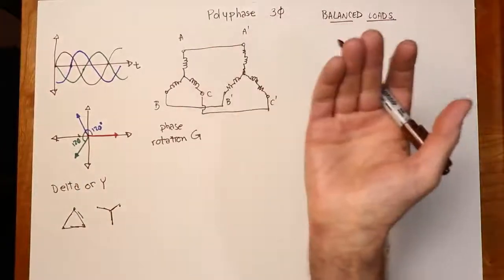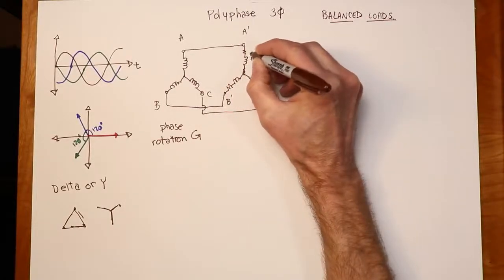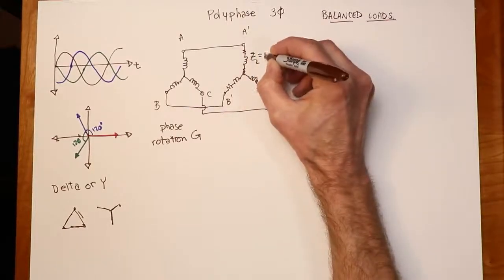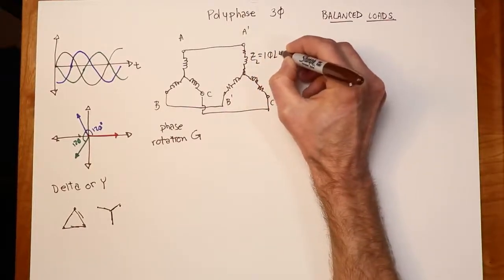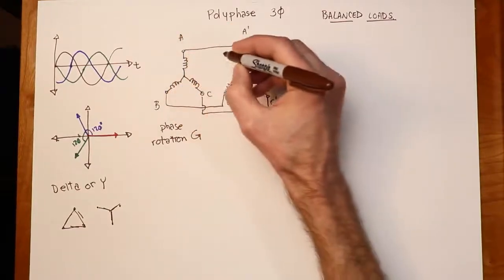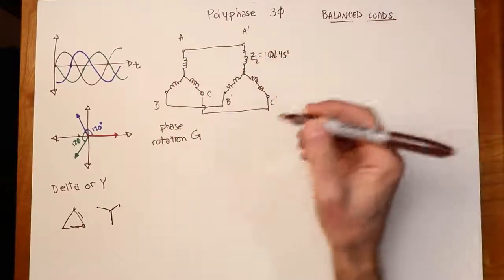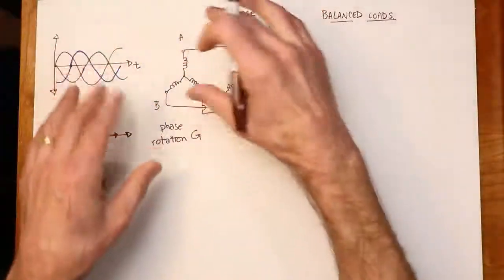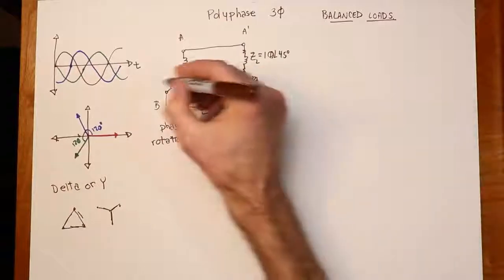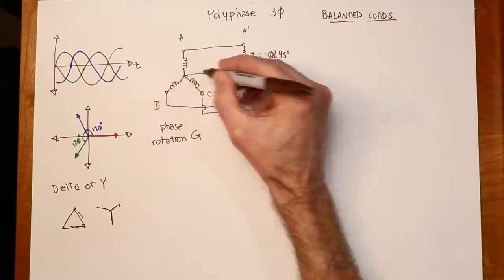Let's take a look at the load. The load impedance — we'll keep it simple — the real and imaginary parts are the same size; we'll say it's 10 at an angle of 45 degrees. As for the generator, we're just going to say this is a standard 120-volt North American system. We have to be very specific about the various sorts of voltages and currents involved.